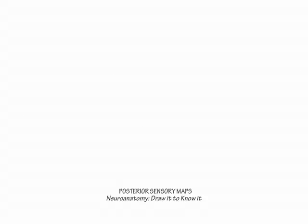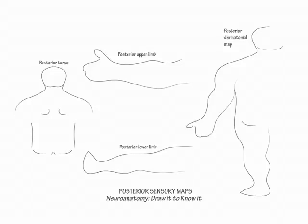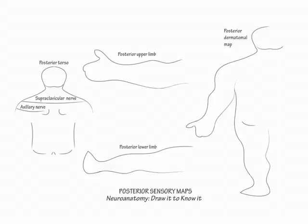Now let's draw the posterior sensory maps. Again, draw the torso and upper and lower extremities for the cutaneous nerve portion. Show the supraclavicular nerve covers the posterior shoulder region, and the axillary nerve covers the lateral region beneath it. Indicate that the greater occipital nerve, derived from the dorsal ramus of C2, covers the posterior scalp. Then show the posterior cutaneous rami cover from the upper back to the buttock. Posterior cutaneous rami exist at each spinal level and are named in reference to the nerve root that supplies them, just like the anterior cutaneous rami.